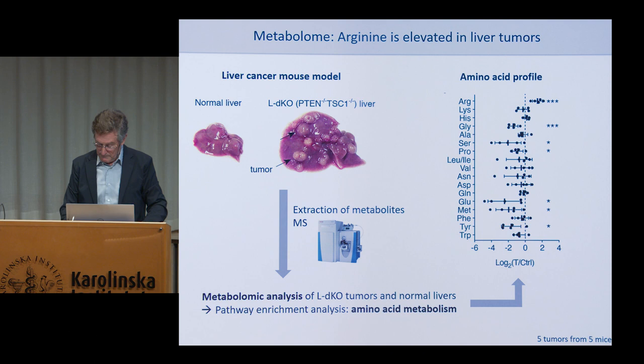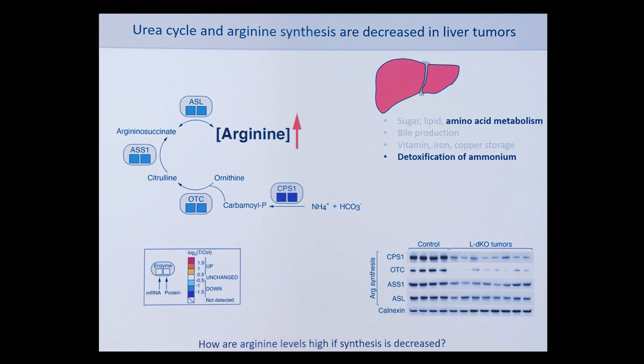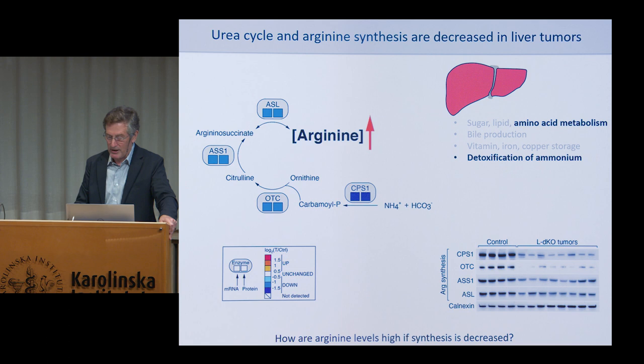We wondered why arginine is increased and whether this is related to the ability of the tumor to grow. The first thing we did was look at our transcriptomic and proteomic studies to see if the arginine biosynthetic pathway was affected. In this pathway — which is part of the urea cycle — the box on the left refers to mRNA from the transcriptome, the box on the right to protein from the proteome; blue means down, red means up. All the enzymes, the genes encoding them, and the proteins of the arginine biosynthetic pathway are down, despite the fact that arginine levels are up. This was a little counterintuitive.